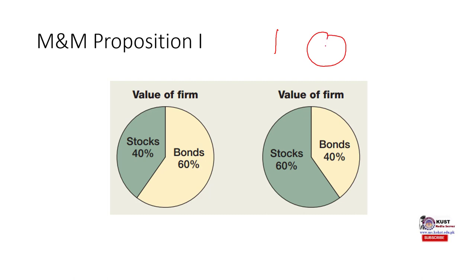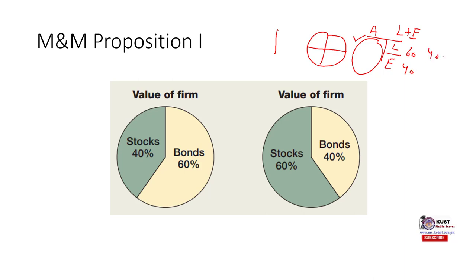For example, you order a pizza and you divide that pizza into four pieces. The amount of pizza you have ordered is the value of the firm — it doesn't matter how many pieces you divide that pizza into, it won't affect the size of the pizza. Similarly, it doesn't matter how we divide the value of the firm's assets. The asset side remains intact; what we are changing is only the right-hand side of the balance sheet — liabilities and owner's equity.